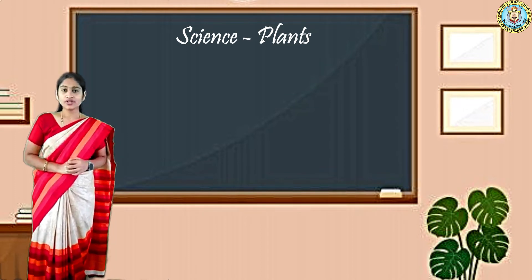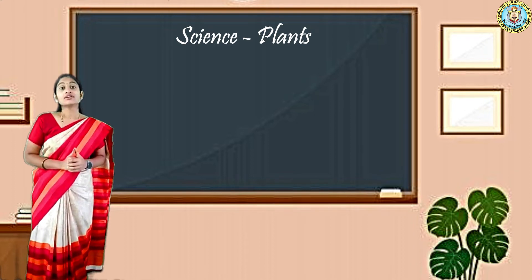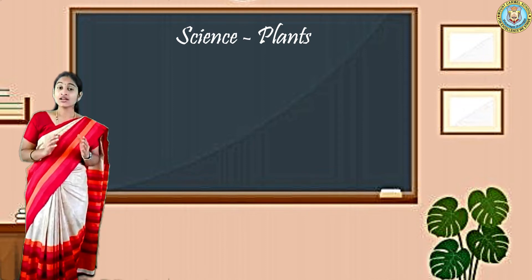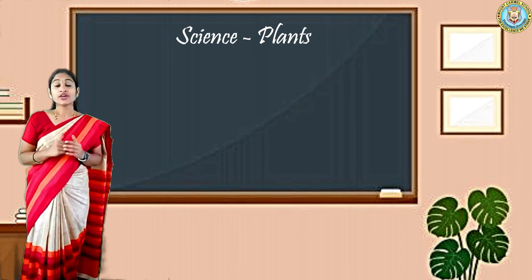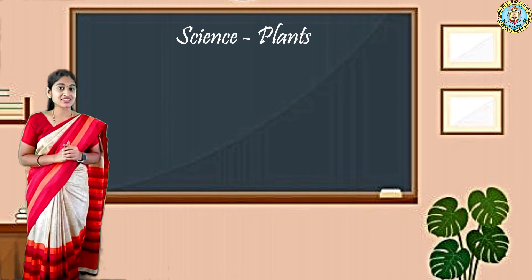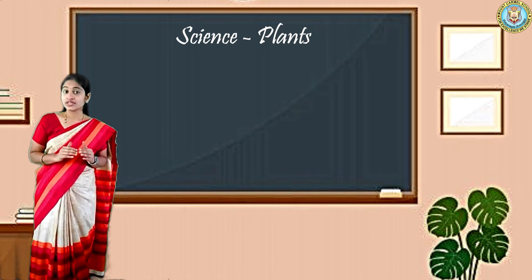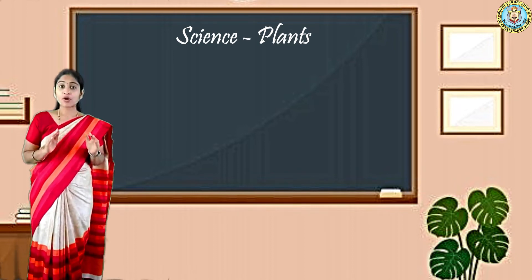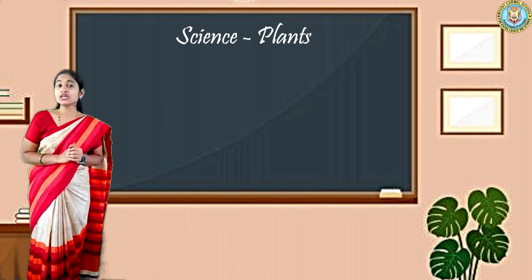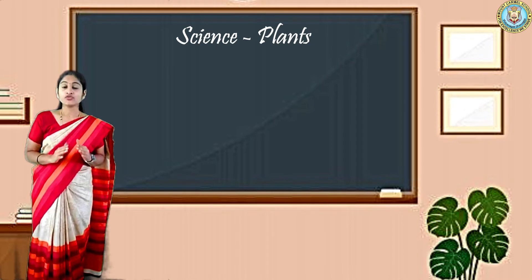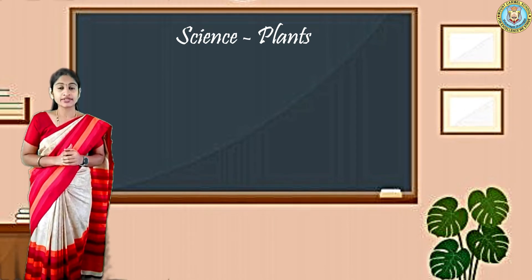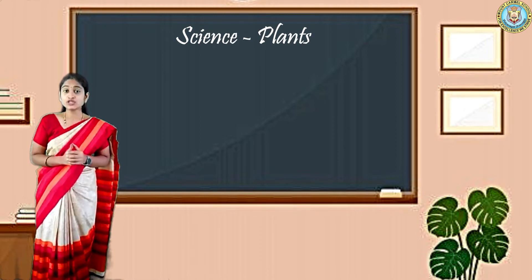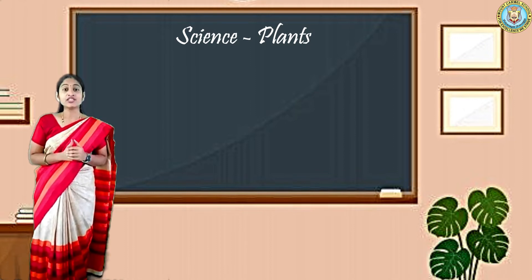In the last class we did some activities. One activity was that for the preparation of food, a leaf requires sunlight. And there are some small pores present on the leaf. For these activities we need a sufficient amount of sunlight. Without sunlight we cannot get a proper result. It is raining outside, so we have to wait for strong sunlight to get proper results. After the sunlight comes, do the activity and keep a record in the form of a photo.